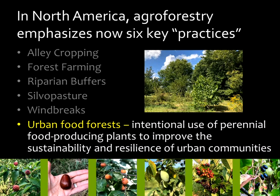Recently, we've started to emphasize a sixth key practice: the urban food forest. This is a situation where we're taking a range of different food-producing plants — perennial plants, which means they remain there from year to year, unlike annual plants. This combination of trees and shrubs can really improve the sustainability and resilience of urban communities. You can see in that image in the upper portion that this type of system can have a wide range of species — it's similar to the home garden we saw in tropical regions. Along the bottom, you can see the wide range of edible products that can come from such a system.